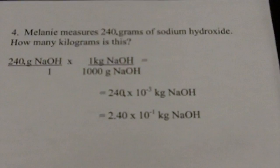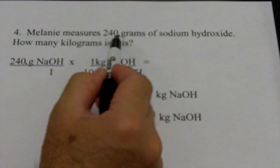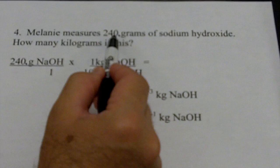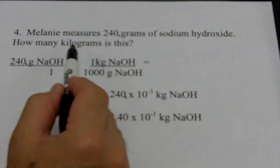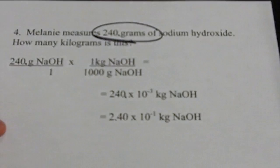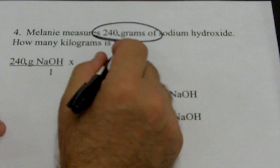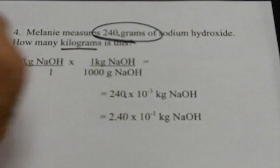Let's take a look at another problem. This involves Melanie. Melanie measures 240. grams of sodium hydroxide. Notice the decimal after 240 — that makes the zero significant. So I have three significant digits instead of just two, by virtue of that decimal. The question is: how many kilograms is this? Start the same way as always: circle what you know — 240. grams — and underline what you're looking for: how many kilograms?